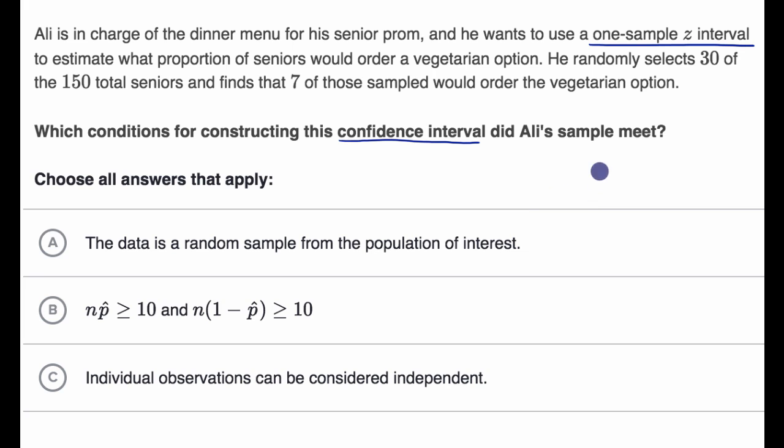But remember, in order to construct a confidence interval, we have to make some assumptions. There's 150 students. He's finding it impractical to survey all 150 to figure out the true population proportion. So instead, he samples 30 of the seniors. So n is equal to 30. And from that, he calculates a sample proportion.